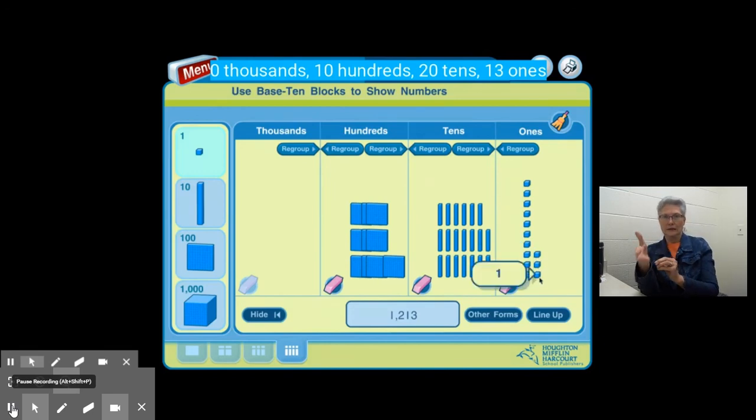So again, every time we're looking at place value, the place value to the left is ten times greater than the one on its right.